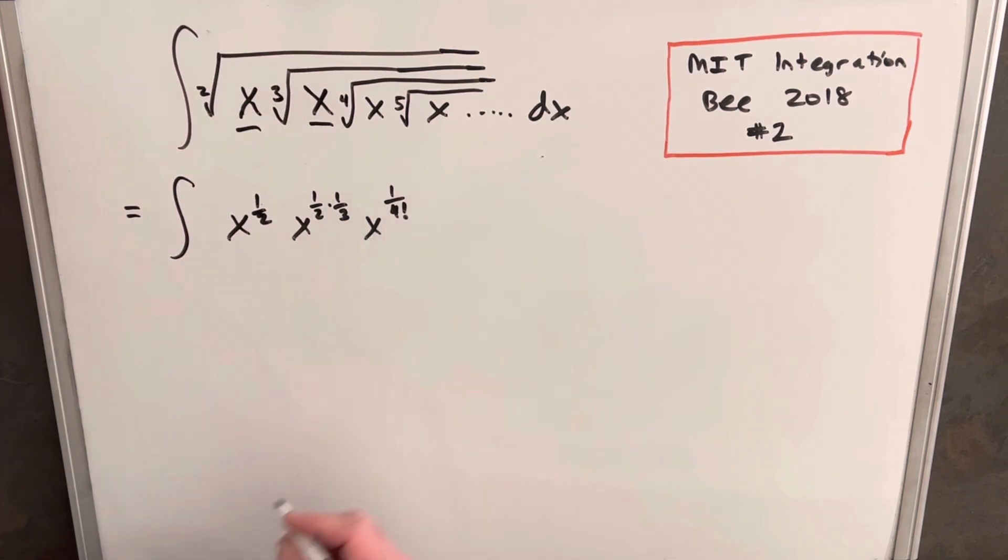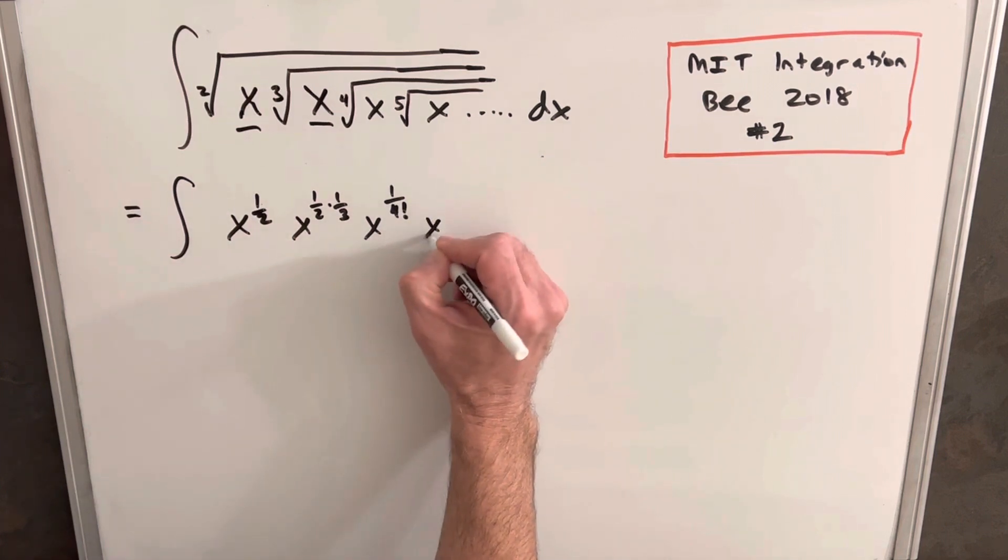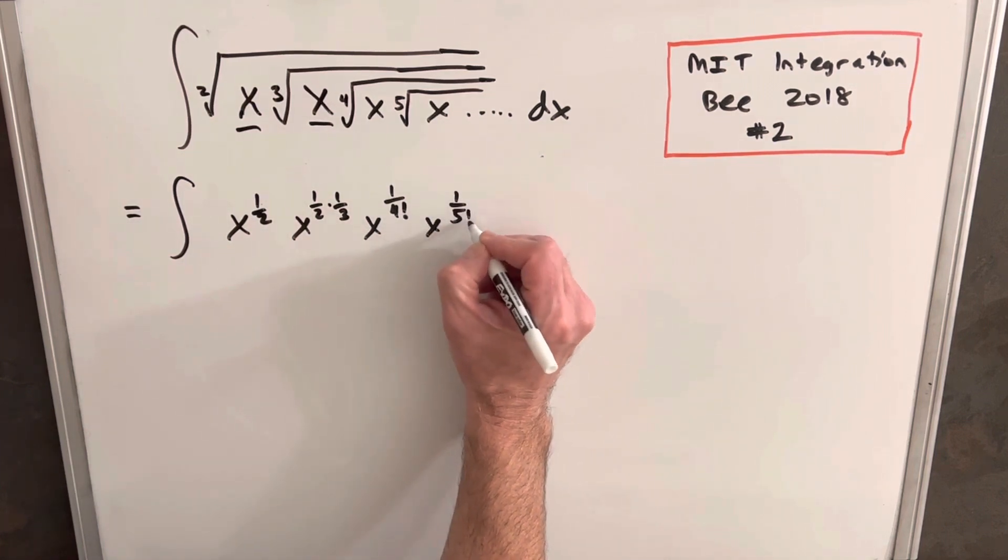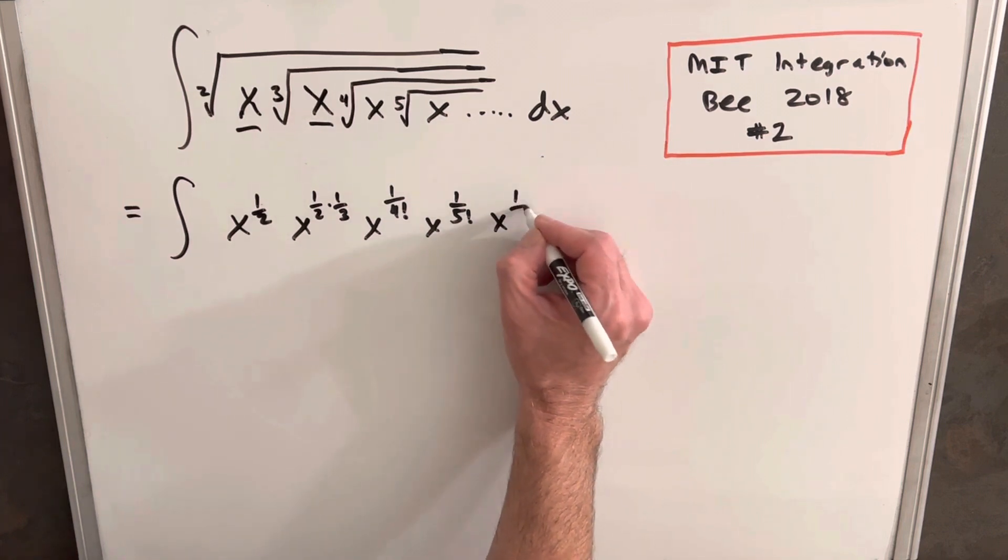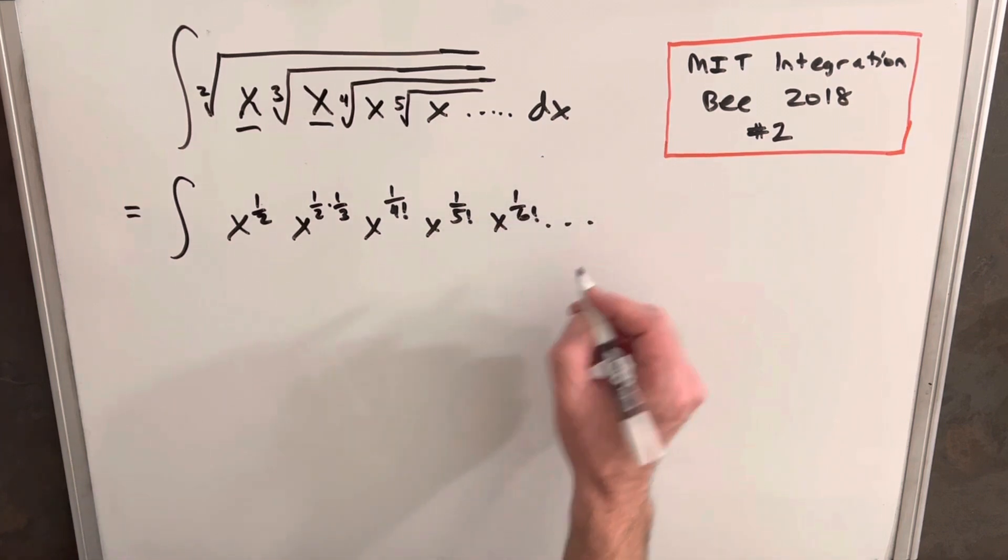Then similarly with the next one, we'll do x to the one over five factorial, x to the one over six factorial, and on and on to infinity.